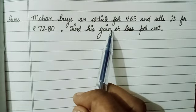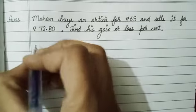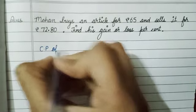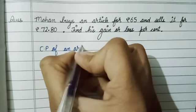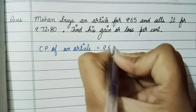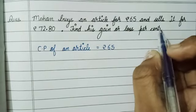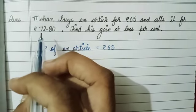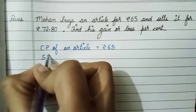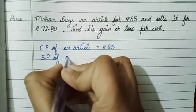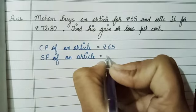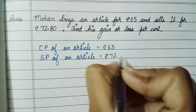In the question, first it is given that the CP of an article is equal to rupee 65. Here CP means cost price of an article, which is equal to rupee 65. And the SP of an article is equal to rupee 72.80. SP means selling price of an article, which is equal to rupee 72.80.